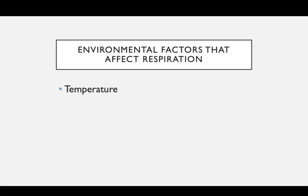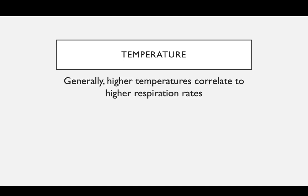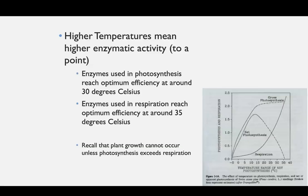So what are some environmental factors that can affect respiration? Number one is temperature. Number two is oxygen and carbon dioxide. And number three is light. Temperature: generally, higher temperatures will correlate to higher respiration rates — of course, if you're cooking the cell to where it can't survive and breaking down your enzymes, that won't hold. But generally, as long as you're not breaking down enzymes, higher temperatures correlate to higher respiration rates. Higher temperatures mean higher enzymatic activity, to a point. The enzymes used in photosynthesis reach optimum efficiency around 30 degrees Celsius, and enzymes used in respiration reach optimum efficiency around 35 degrees Celsius.